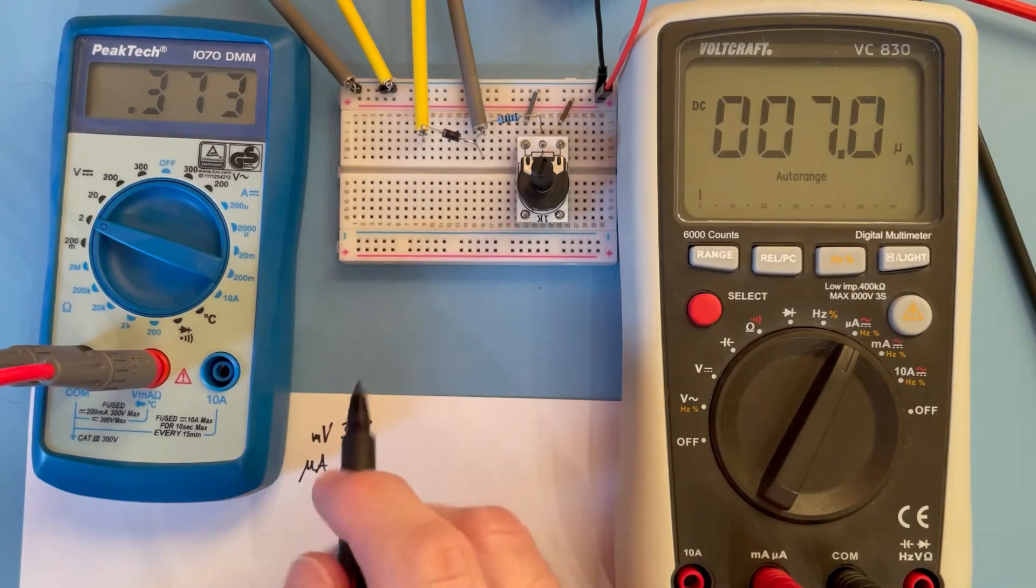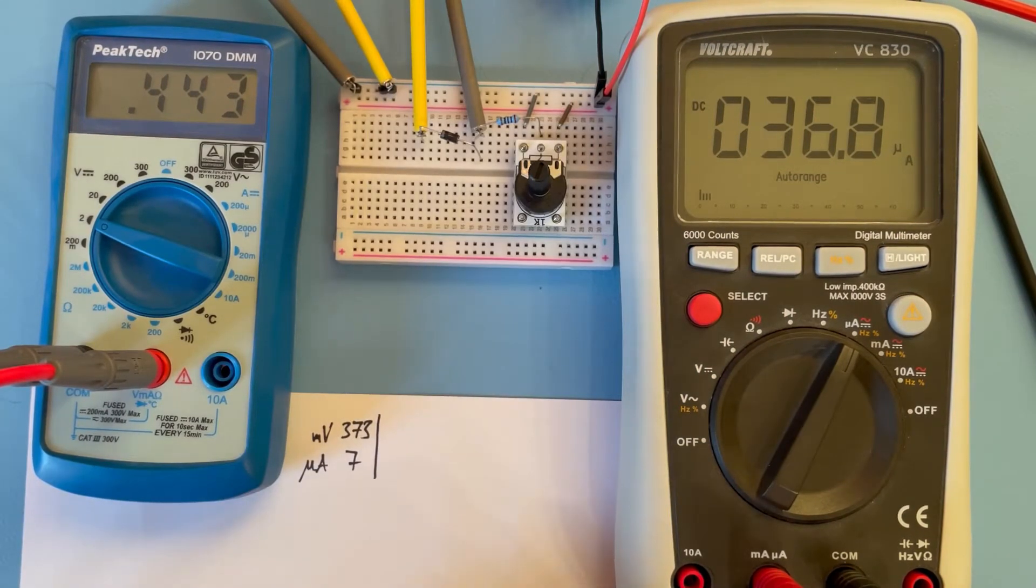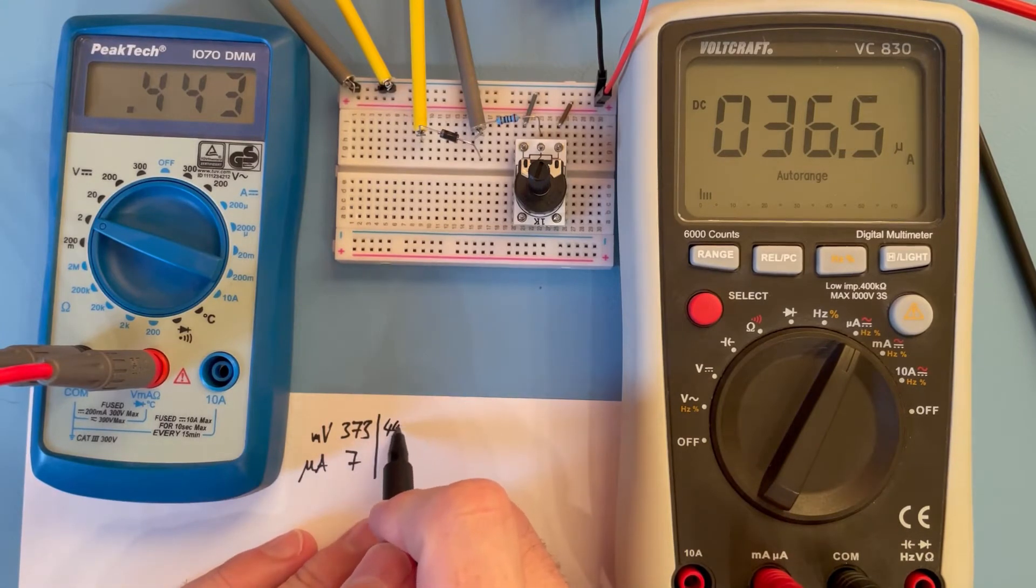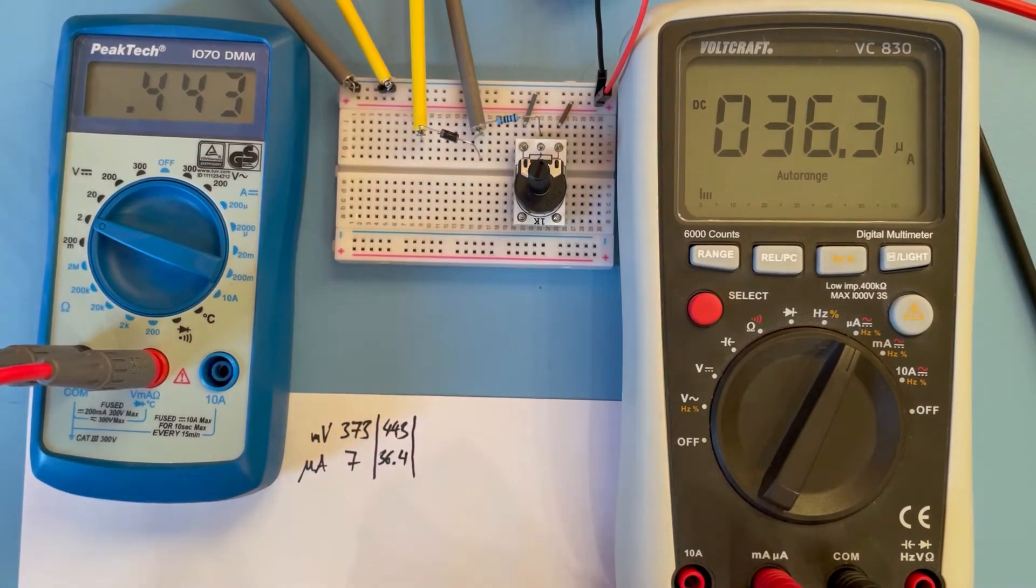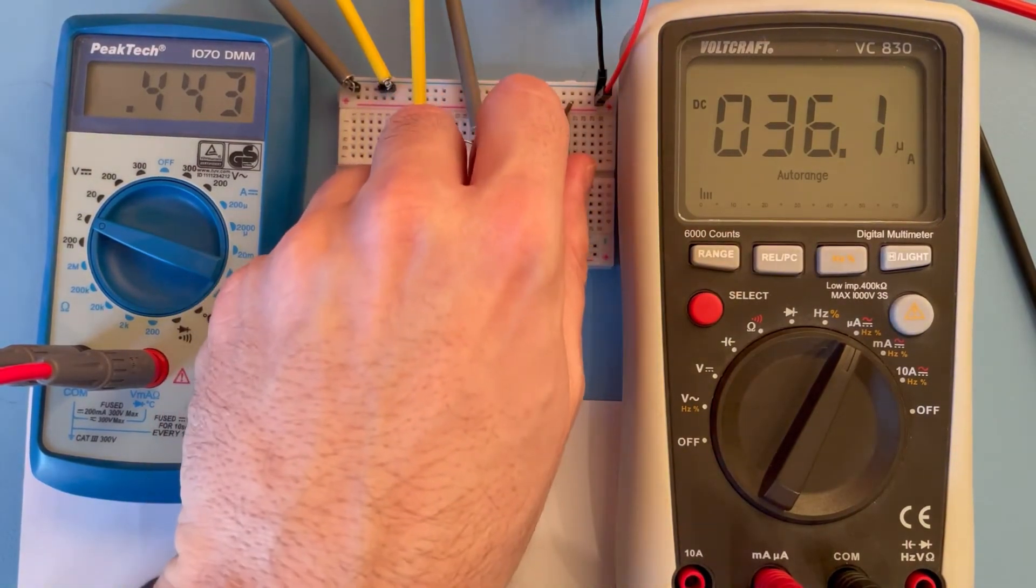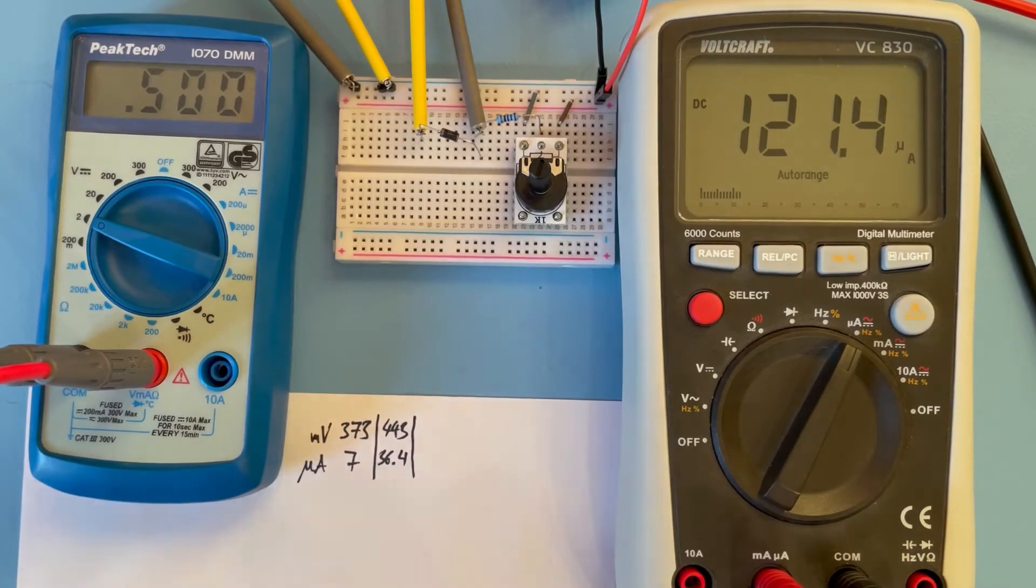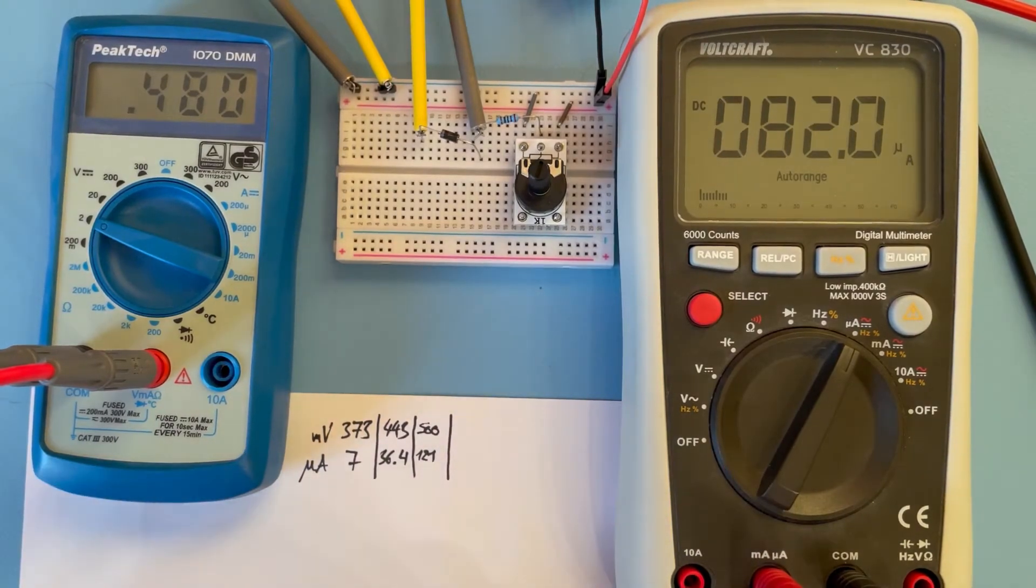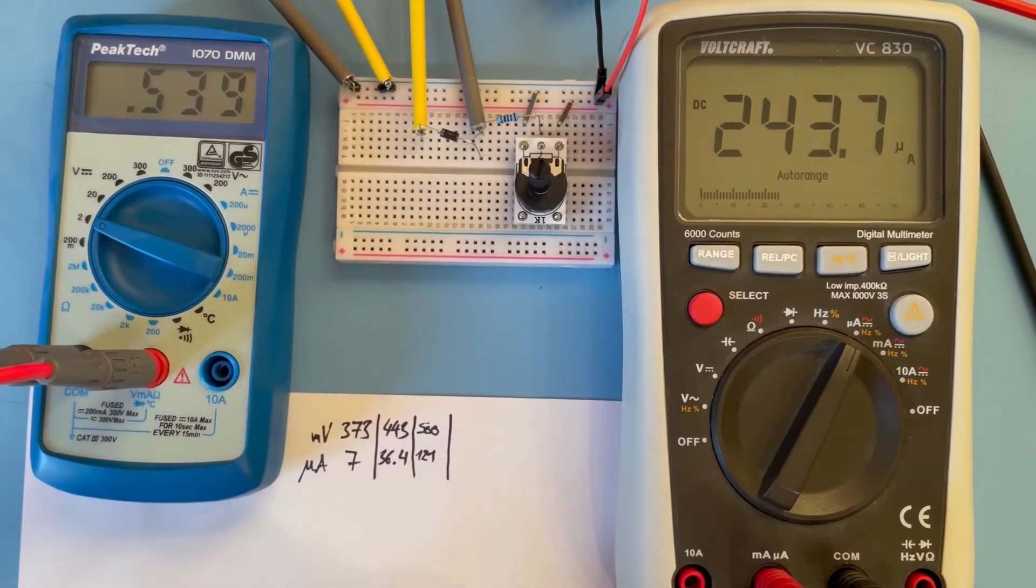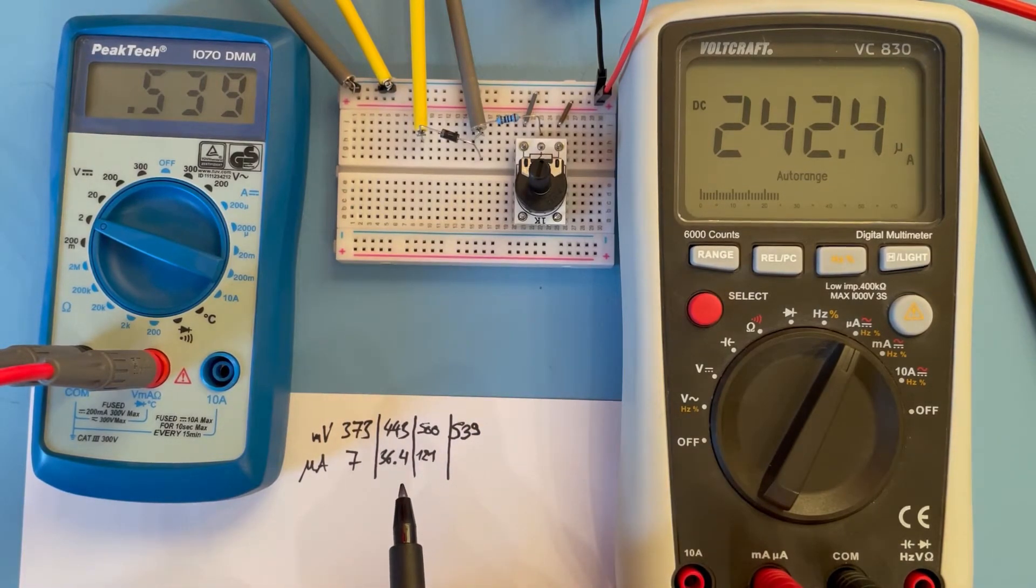Take another one: 443 millivolts and 36.4 microampere. Then next value: 539 and 242.